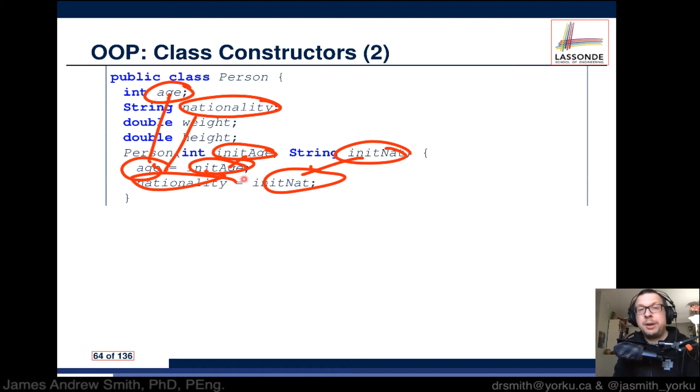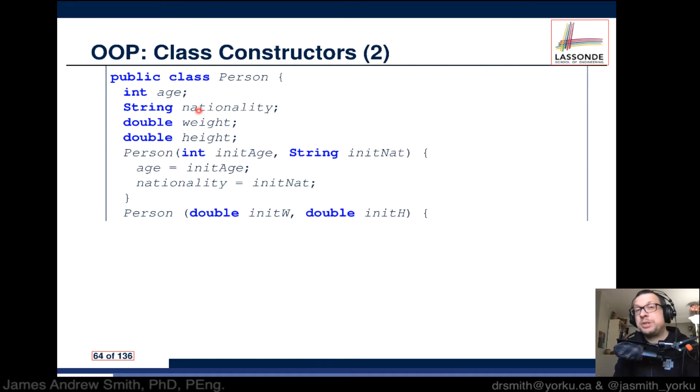We're taking the stuff that's the input and assigning it or setting up those inputs with respect to the internal characteristics, the internal attributes, the internal variables of the class. But look at this, we have one constructor and now we have another constructor.